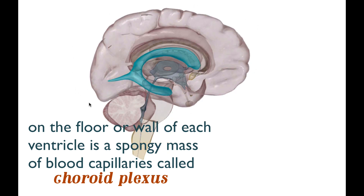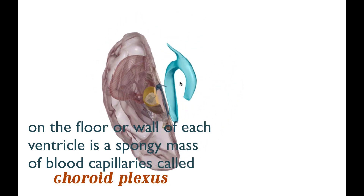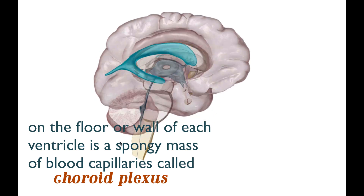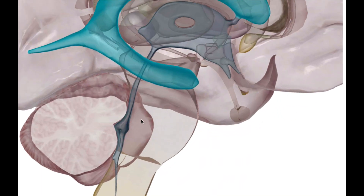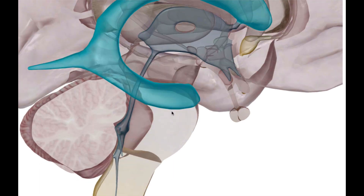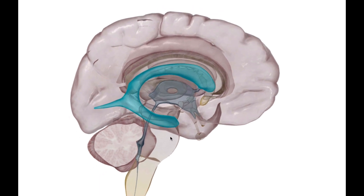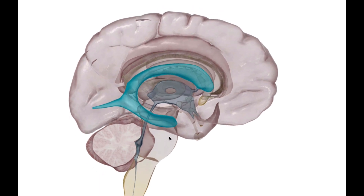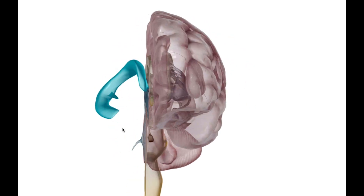Ependymal cells essentially produce the cerebrospinal fluid that surrounds the brain. It cushions the brain and it goes down the spinal cord as well, supporting it by providing nutrients, getting rid of waste products, and providing support and cushion for the brain anytime it's jostled. So it provides a space between the brain and the cranium.